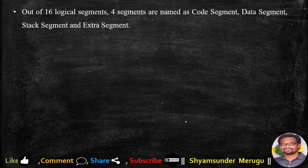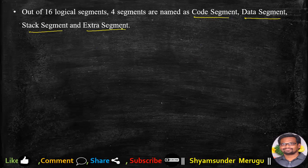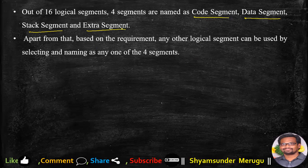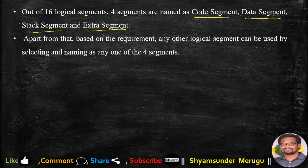Out of these 16 logical segments, we name 4 segments as code segment, data segment, stack segment, and extra segment. Based on requirement, any other logical segment can be used by naming it as one of the 4 segments. For example, if you are working with the data segment of 64 KB and that is not sufficient, you choose any one of the remaining 12 segments and, using the assembler directive, assume it as a data segment and use it accordingly.